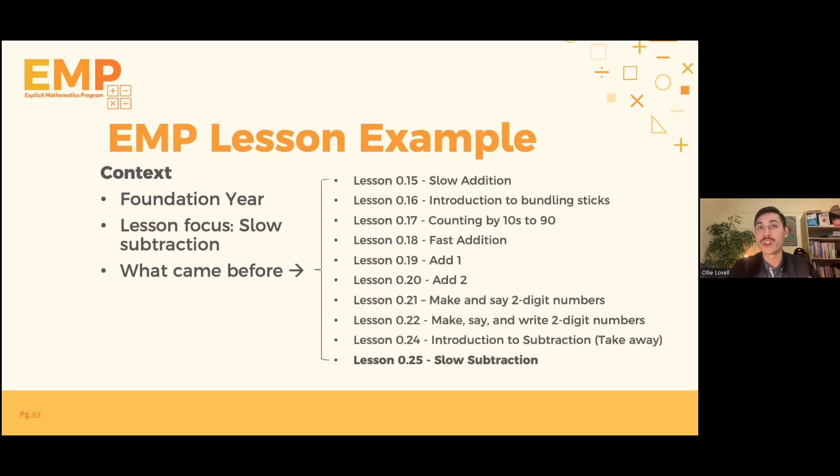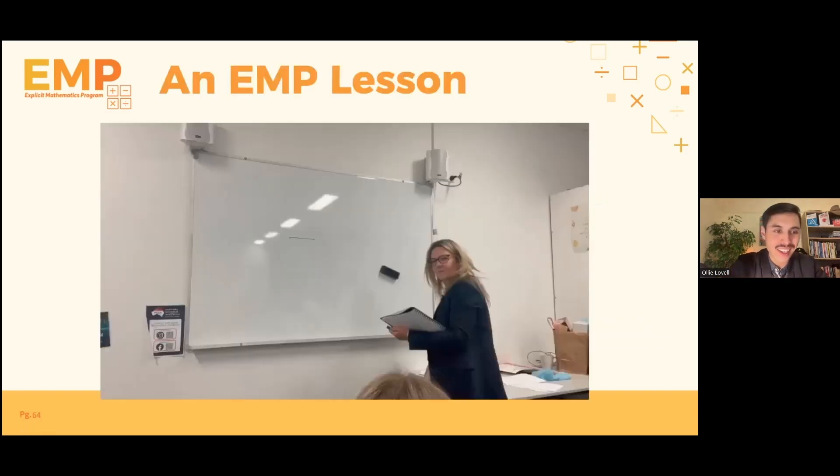So the example I showed earlier was slow addition, where you had the 5 plus 3 with the lines under the 3 equals 8. This is slow subtraction, very similar. And in terms of what came before, this is Lesson 25 in the Foundation year. Here is the lessons from 15 to 25, so you can get a sense of what came before. Probably most pertinent is the fact that we introduced the idea of subtraction, not in a formal sense, but in terms of taking things away in the prior lesson, which built a good foundation for this idea of slow subtraction. But you'll also see a whole heap of interleaving or mixing up of content before that, purposefully and systematically as well.